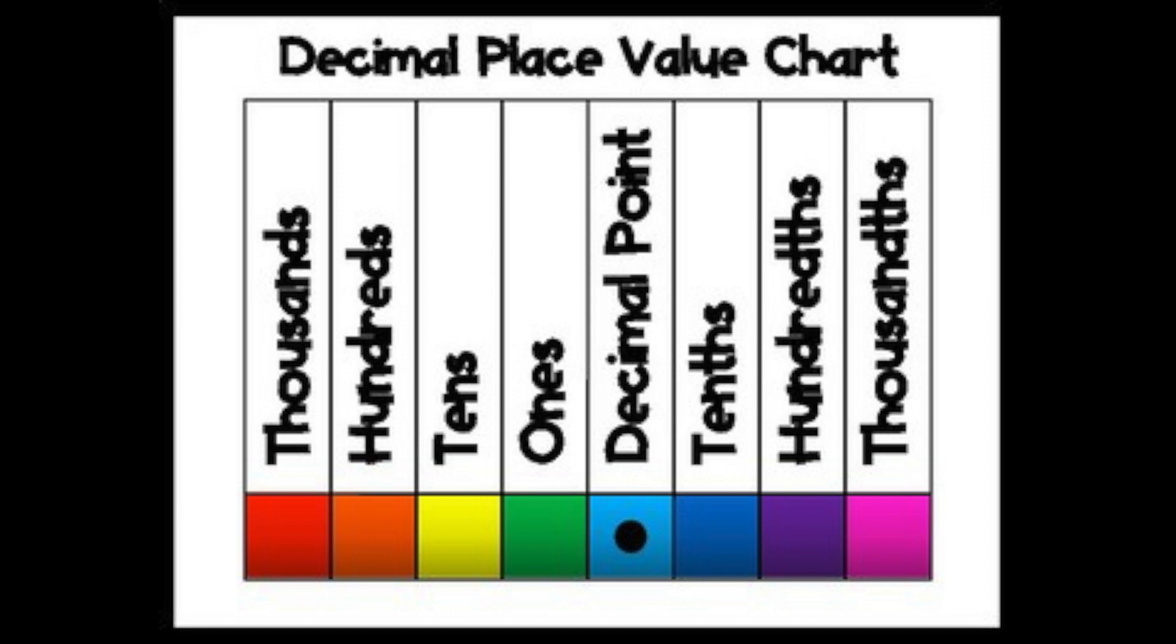To the right of the decimal, you have your tenths, hundredths, and thousandths, which are all part of a whole. This is very important when you're adding decimals or subtracting because you want to make sure you put the digit in the correct place value.